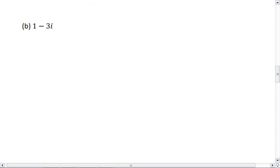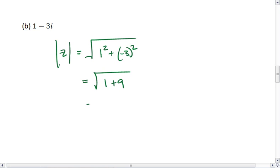How about the magnitude for 1 minus 3i? The magnitude of this number is the square root of 1 squared plus negative 3 squared, which equals the square root of 1 plus 9. We get the square root of 10. Those are your magnitudes.